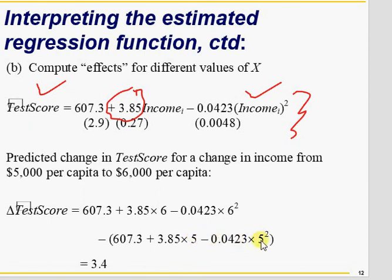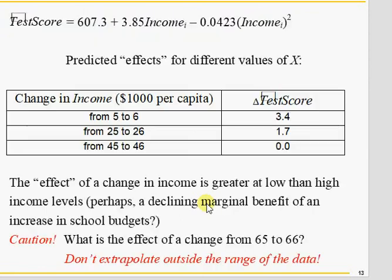The difference in test score in one range is 3.5, while the change in income is one thousand dollars per capita. But in another range, the change is also one thousand dollars per capita yet the test score change is zero. That's how you interpret a nonlinear model in variables — interpretation differs from one range to another. As a caution, we don't have data for sixty-five thousand or sixty-six thousand dollars per capita income, so never make predictions beyond your data range.